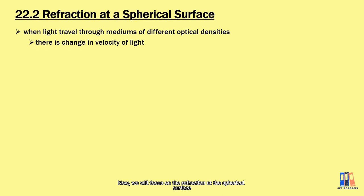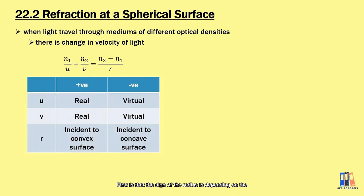Now, we'll focus on the refraction at the spherical surface where the derivation is not needed. It is given as n1 over u plus n2 over v equal to n2 minus n1 over r. There could be different sign conventions for the formula that you may come across in reference books. First is that the sign of the radius depends on the type of surface that's hit by the incident ray.